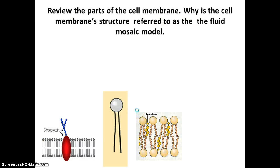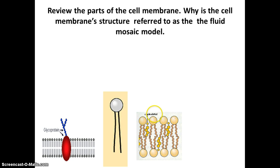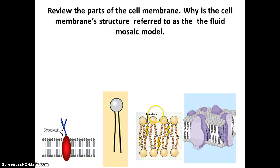So review the parts of the cell membrane and why it is referred to as a fluid mosaic model. Remember, it has carbohydrates, phospholipids, cholesterol, and importantly, proteins.